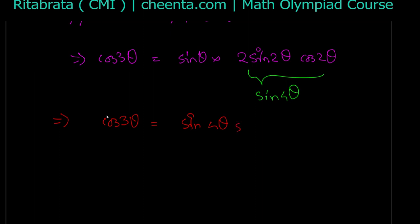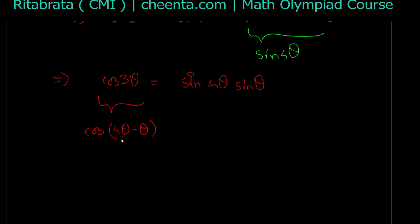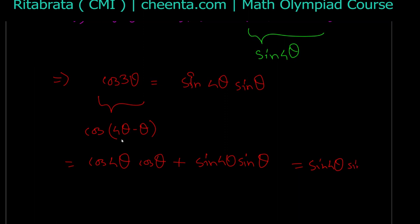Now we express sin(θ) sin(4θ) using the compound angle formula: cos(4θ − θ) = cos(4θ) cos(θ) + sin(4θ) sin(θ). So sin(4θ) sin(θ) = cos(3θ) − cos(4θ) cos(θ). Substituting back: cos(3θ) = cos(3θ) − cos(4θ) cos(θ). These cos(3θ) terms cancel, leaving: cos(4θ) cos(θ) = 0.